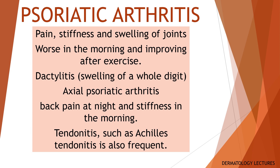Psoriatic arthritis affects up to 30% of people with psoriasis and usually occurs within the first 10 years of developing psoriasis. Typical features are pain, stiffness, and swelling of the joints, worse in the morning and improving after exercise. Dactylitis, that is swelling of the whole digit, is a feature of psoriatic arthritis. Axial psoriatic arthritis can present with back pain at night and stiffness in the morning. Tendonitis such as Achilles tendonitis is also frequent. All people with suspected psoriatic arthritis should be referred to a rheumatologist at the onset of symptoms to prevent permanent joint damage. Annual screening for psoriatic arthritis using a validated screening tool such as the Psoriasis Epidemiology Screening Tool (PEST) is recommended.